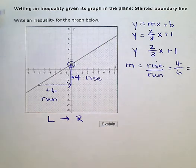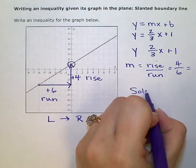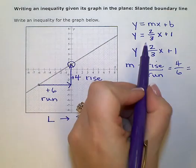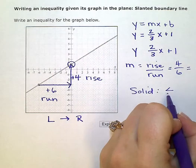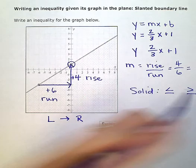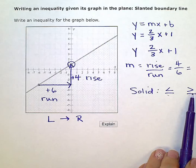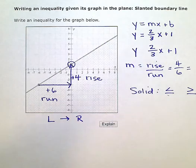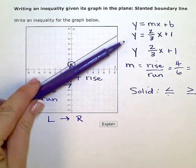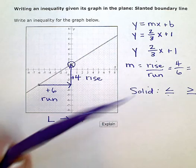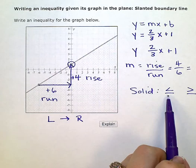So since I have the solid line, I know that I'm going to either replace that equals right here with less than or equal to, or greater than or equal to. So now I just need to decide which one of these two goes right there. And since I shaded below the line, the shading on this graph is below the line, I know it's going to be the less than or equal to.